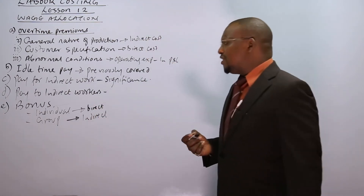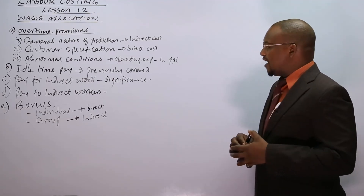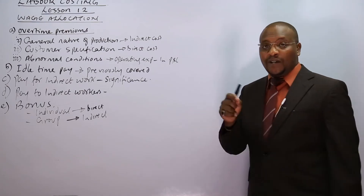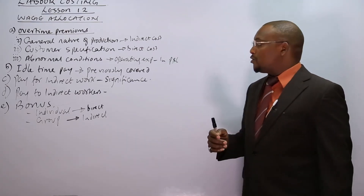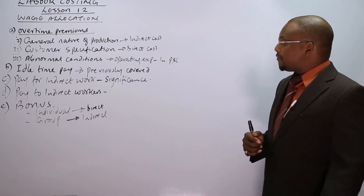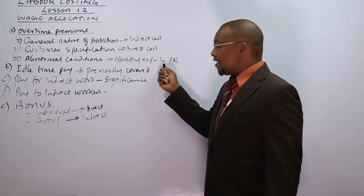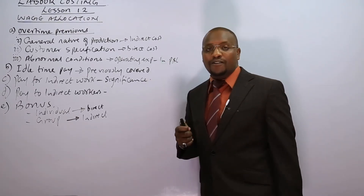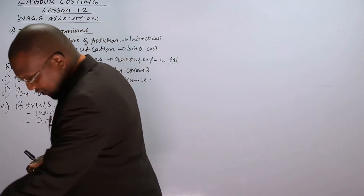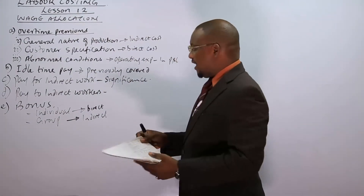We need to know how to treat these items of labor expenditure — whether they form part of direct labor cost or part of factory/production overheads — with the exception of abnormal conditions, which go to the income statement and do not form part of factory overheads. Let's now look at some examples to understand these concepts.